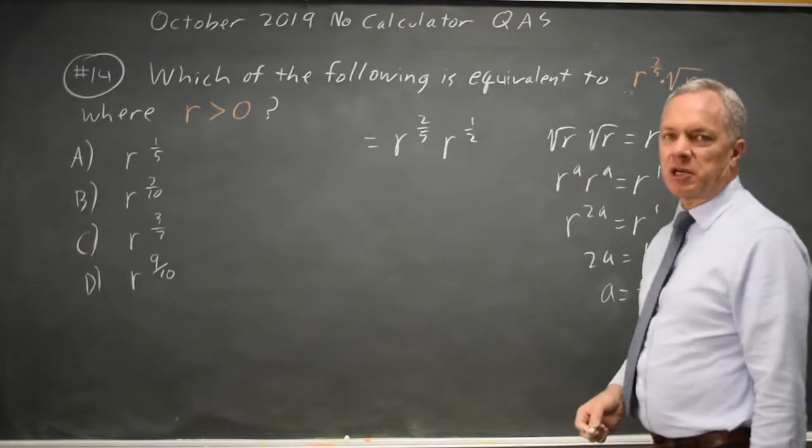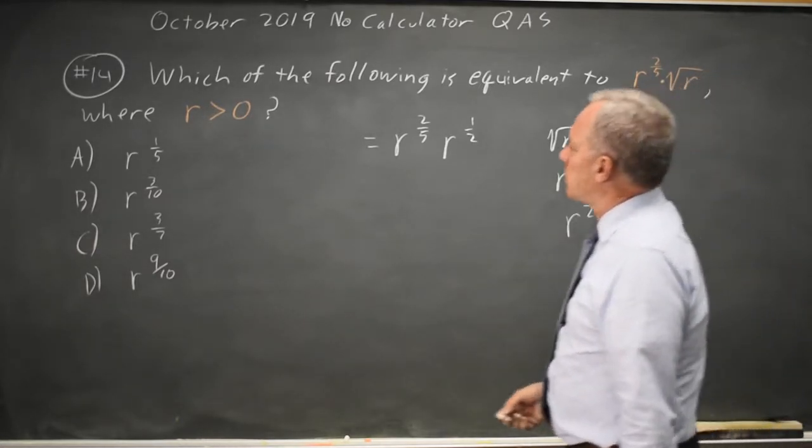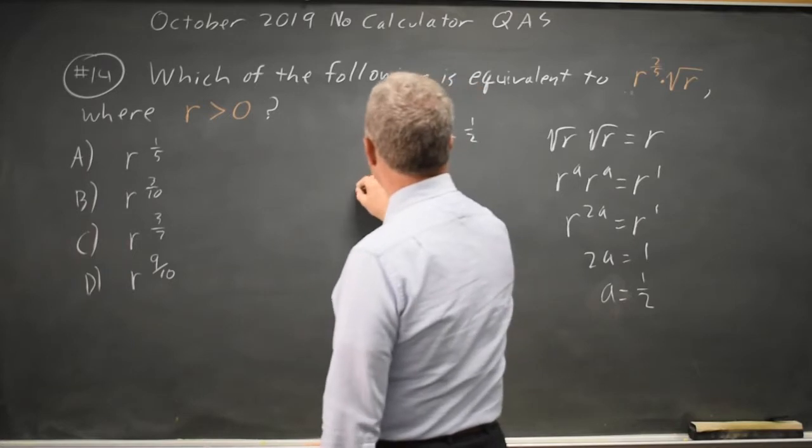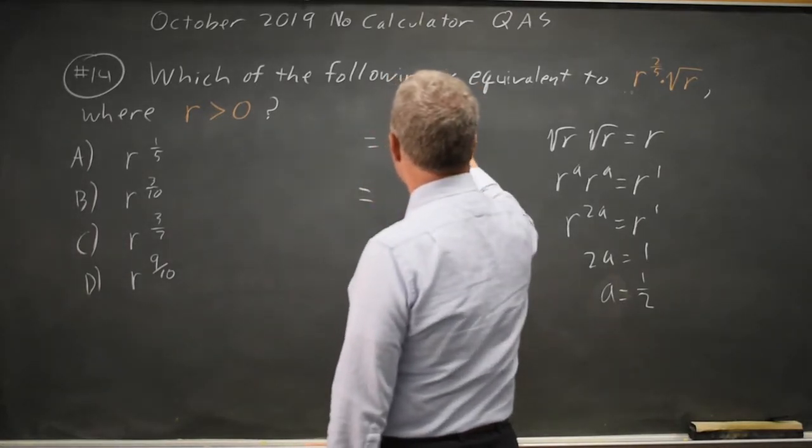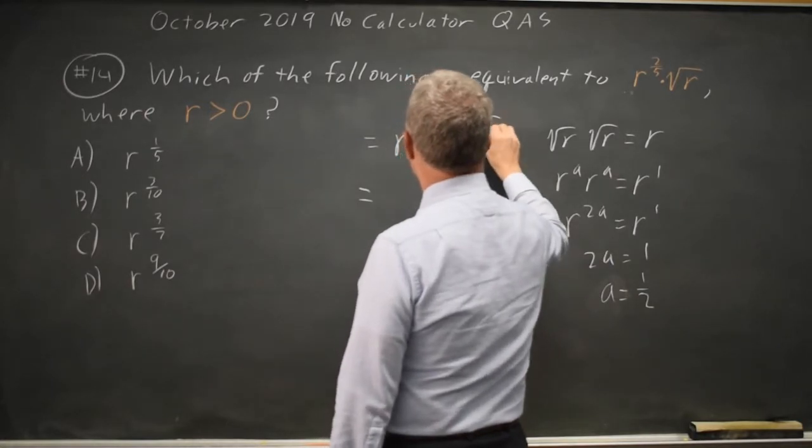A square root is the same as a 1 half exponent. If you have powers of the same base you add exponents, so let's get a common denominator, multiply by 2 over 2 and 5 over 5.